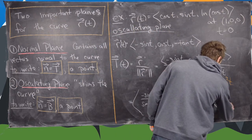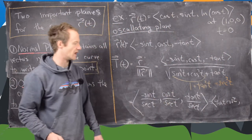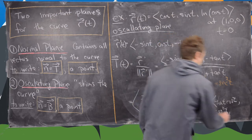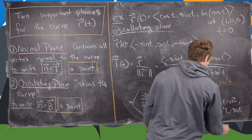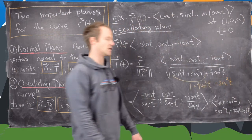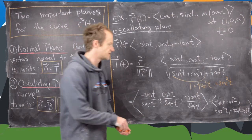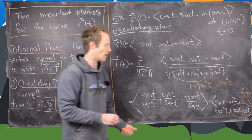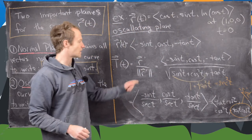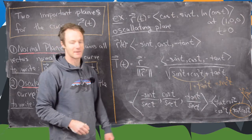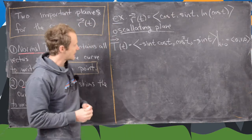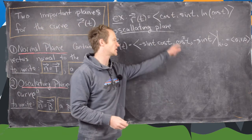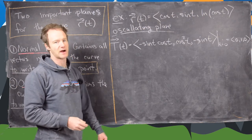Simplifying each component: the first entry is negative sine t times cosine t, the second is cosine squared t, and the third is minus tangent t times cosine t. Since tangent is sine over cosine, that last term simplifies to just negative sine t. So our unit tangent vector at an arbitrary t is (−sin t cos t, cos²t, −sin t). Evaluating at t equals 0 gives (0, 1, 0).